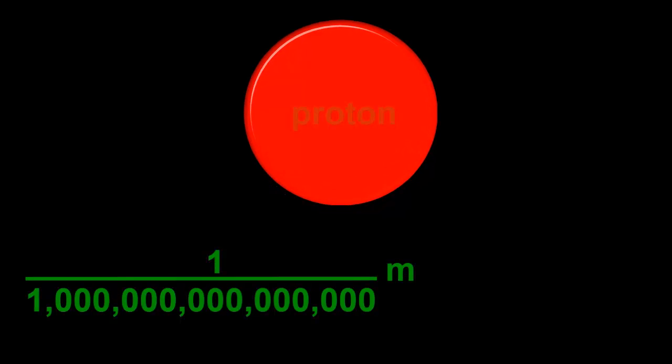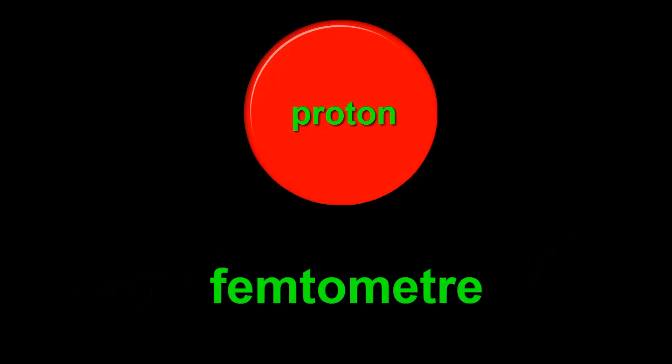We would have to zoom in with a magnification of 10, 5 times, adding another 5 zeros to the bottom of the fraction. That's with 15 zeros on the bottom line. 10 to the negative 15 of a metre. Protons and neutrons are a quadrillionth of a metre wide. Also called a femtometre.